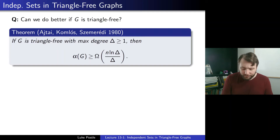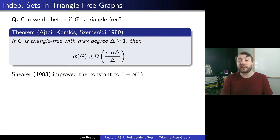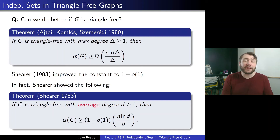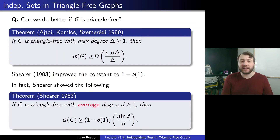Shearer in 1983 improved the constant to (1 - o(1)) using the natural log. It's known you can't do too much better. Shearer actually proved an average degree version: if G is triangle-free with average degree d (at least 1), then alpha(G) is at least (1 - o(1)) n log d / d. This improves on the Karo-Way bound when G is triangle-free.